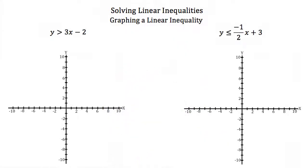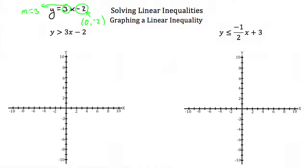Next, we're going to talk about how to graph a linear inequality. Here we're given y is greater than 3x minus 2. To graph this, the first step is to treat it as y is equal to 3x minus 2 and find points on that line. This is in slope-intercept form, which means our y-intercept is at negative 2, or the point (0, -2), and our slope is 3. We'll start at our y-intercept, which is (0, -2).